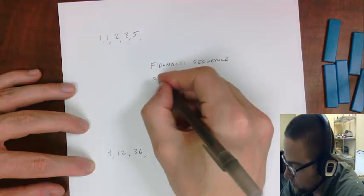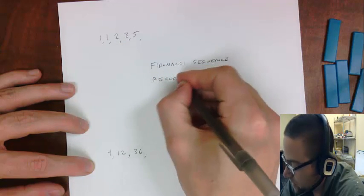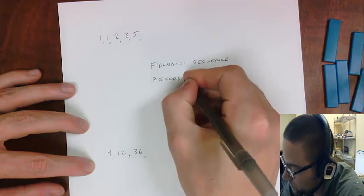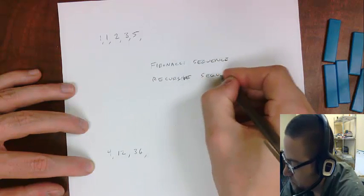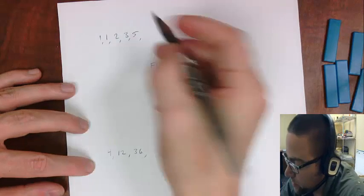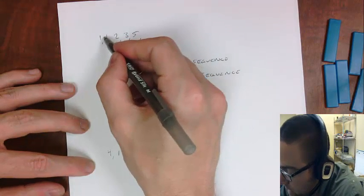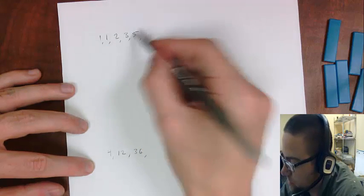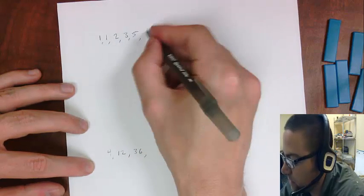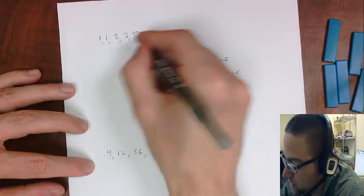And it's also called the recursive sequence, where it depends on the previous number. So see, we add 1 plus 1 to get 2. We add 1 plus 2 to get 3. 2 plus 3 to get 5. So then the next one would be 3 plus 5 to get 8.